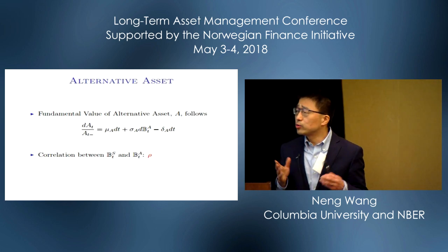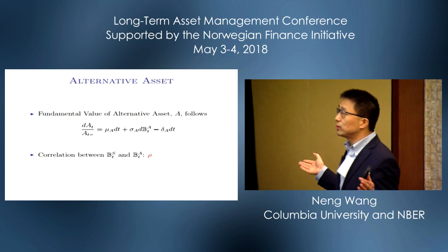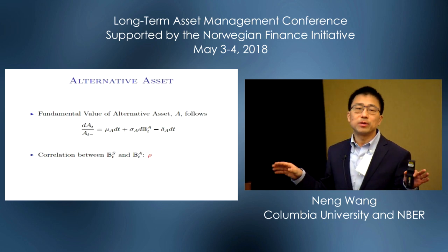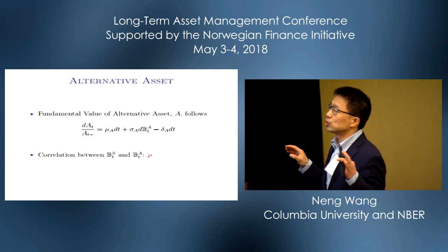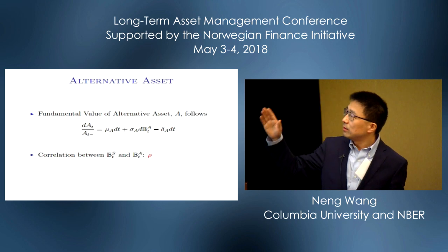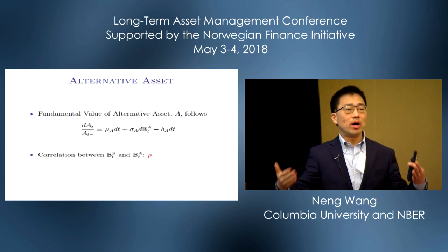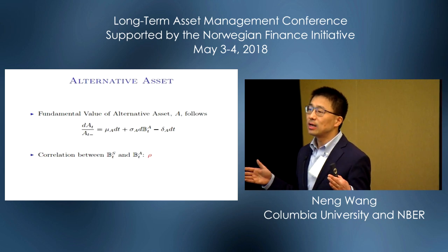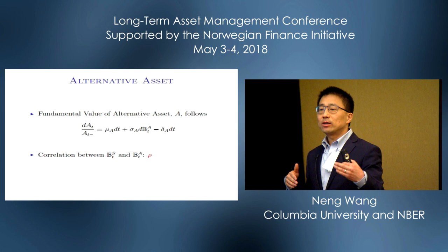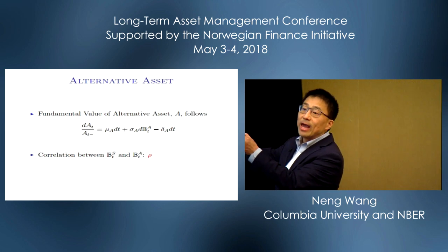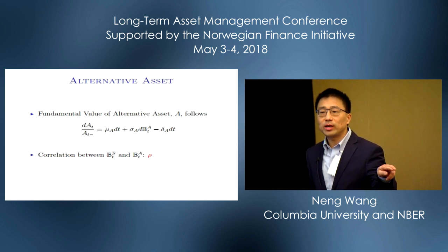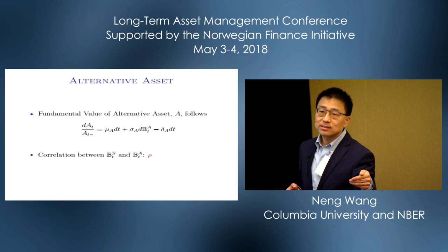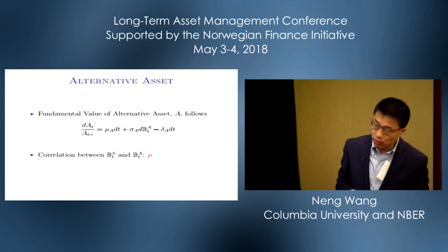For alternative assets, I want the simplest possible model. Let A denote the fundamental value — think of it as some sort of fundamental value measure — with IID returns. I intentionally separate mu_A and delta_A, because I need one way for illiquid alternatives to return cash back to investors. Think of delta_A as a payout yield: the payout per unit of time is delta_A times the size of A. Sigma_A is the volatility. Public equity and alternatives are correlated, but the correlation is definitely not one — so you get a diversification benefit. I'll use rho to denote the correlation. So we have three assets.